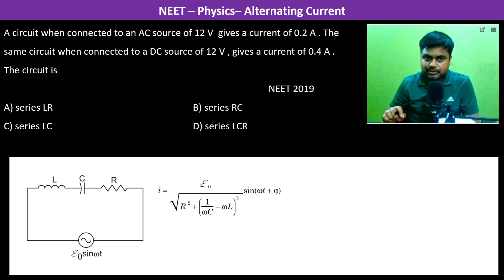A circuit when connected to an AC source of 12 volts gives a current of 0.2 Ampere. This is when it is connected to AC source. The same circuit when connected to a DC source of 12 volts gives a current of 0.4 Ampere.